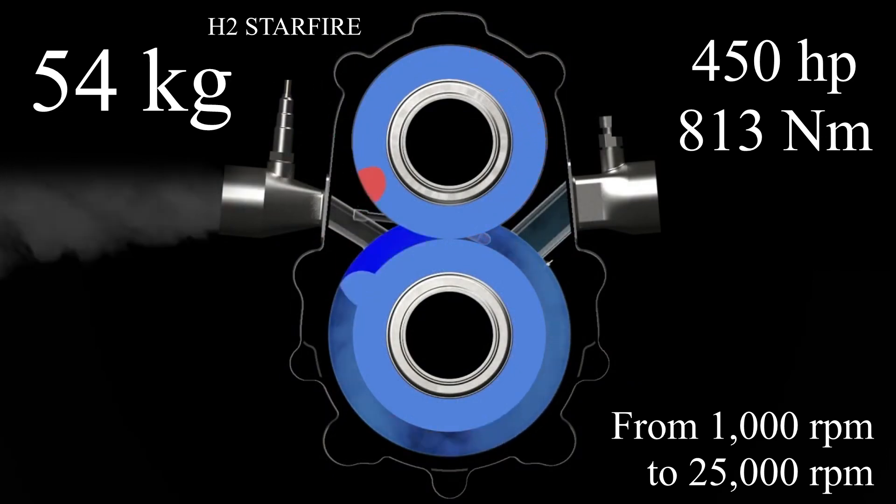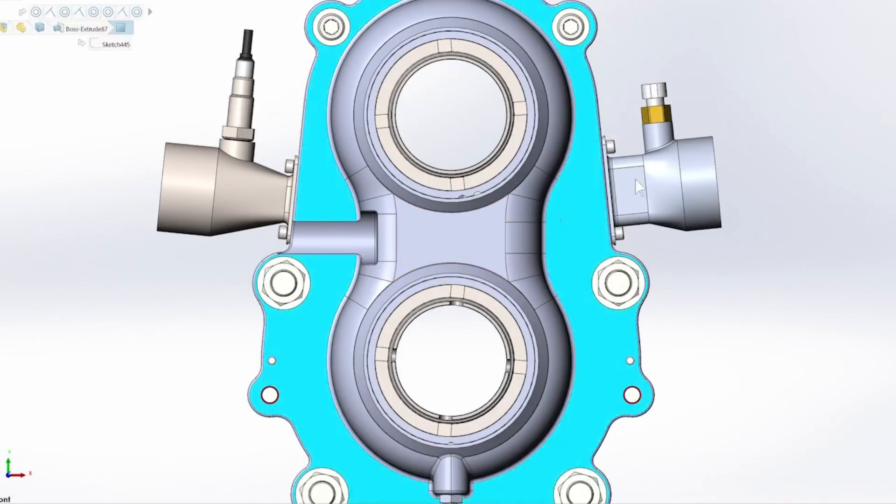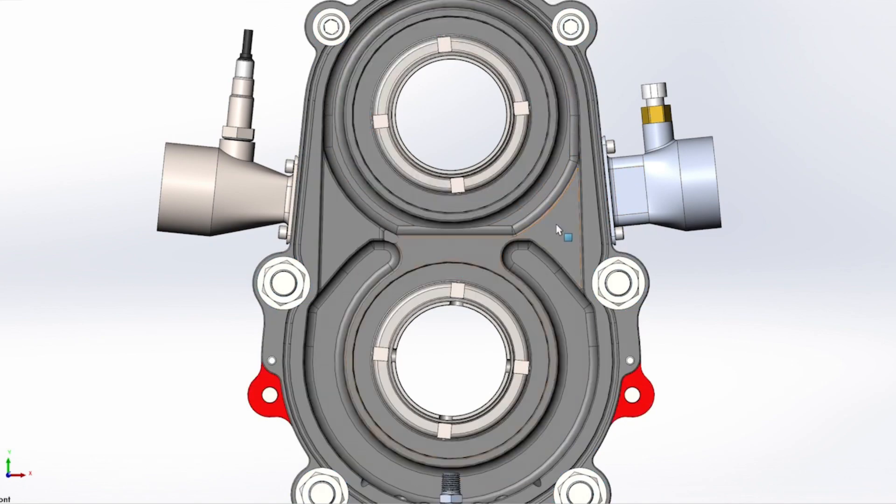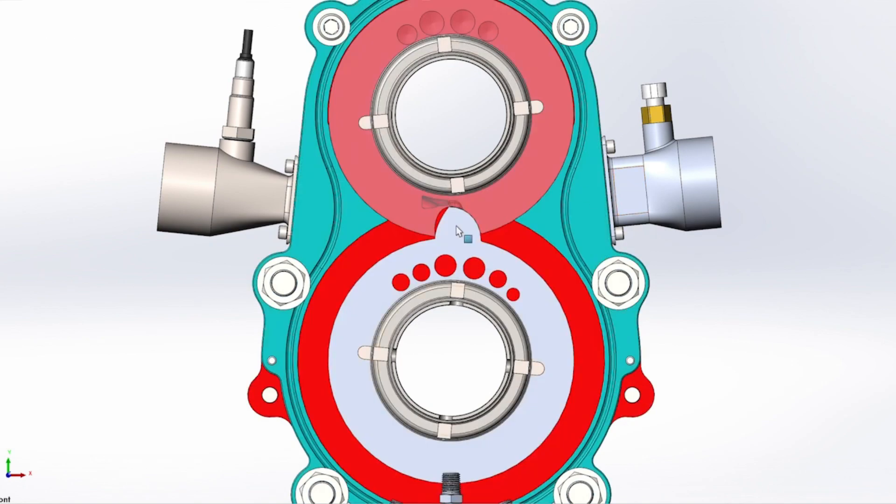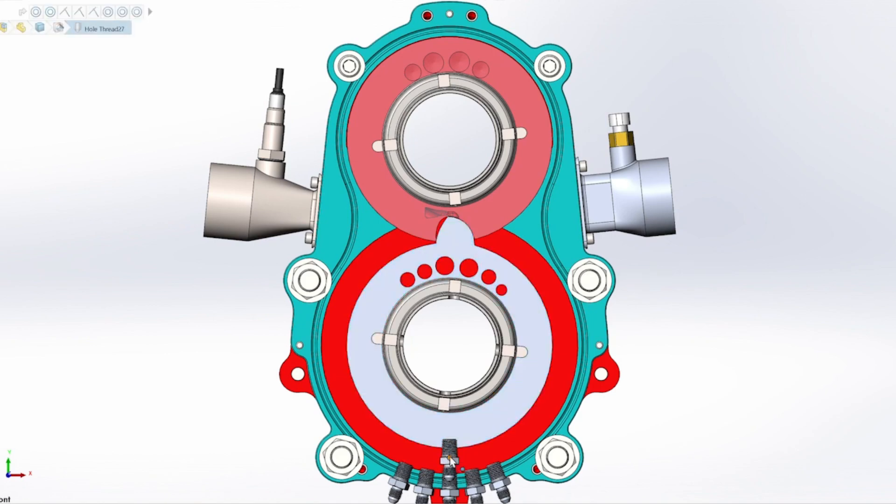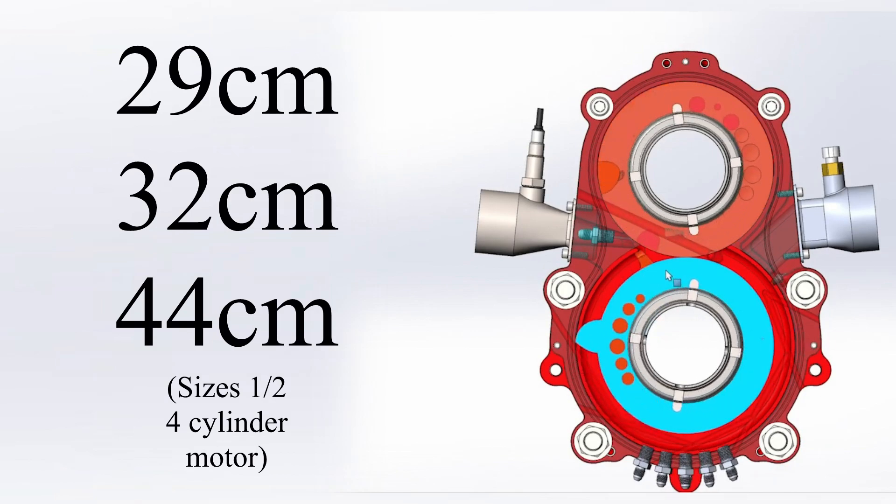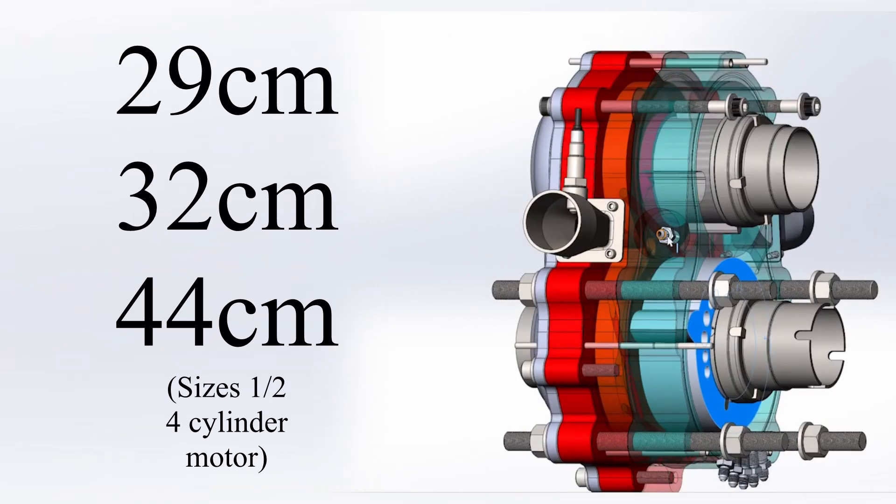The idle speed is set at 1,000 RPM, and it can rev up to 25,000 RPM. In terms of size, this engine is twice as small as a small four-cylinder conventional engine, but it is four times as powerful and twice as light. The H2 Starfire engine is 29 centimeters wide, 32 centimeters deep, and 44 centimeters tall.